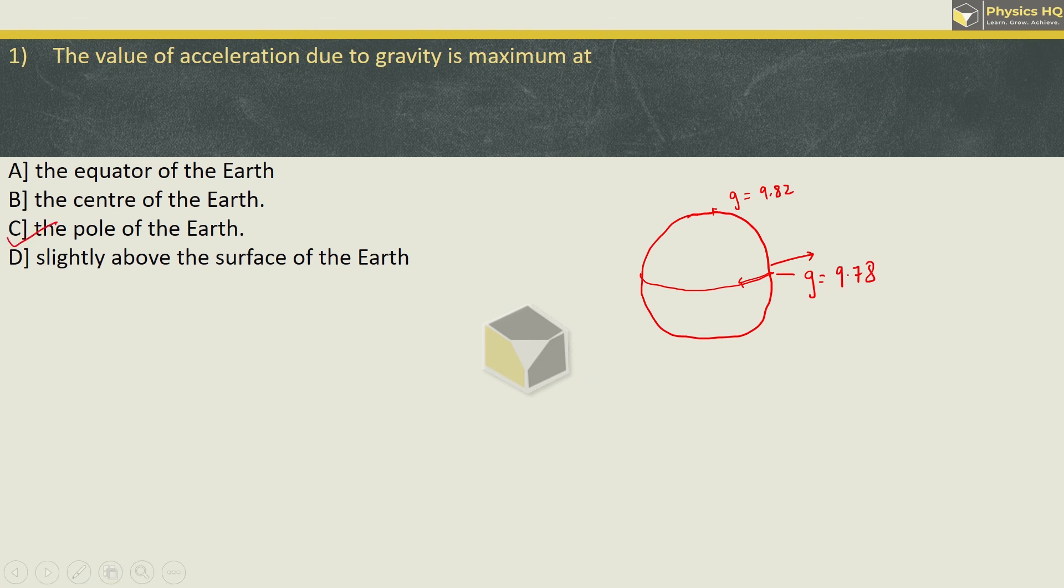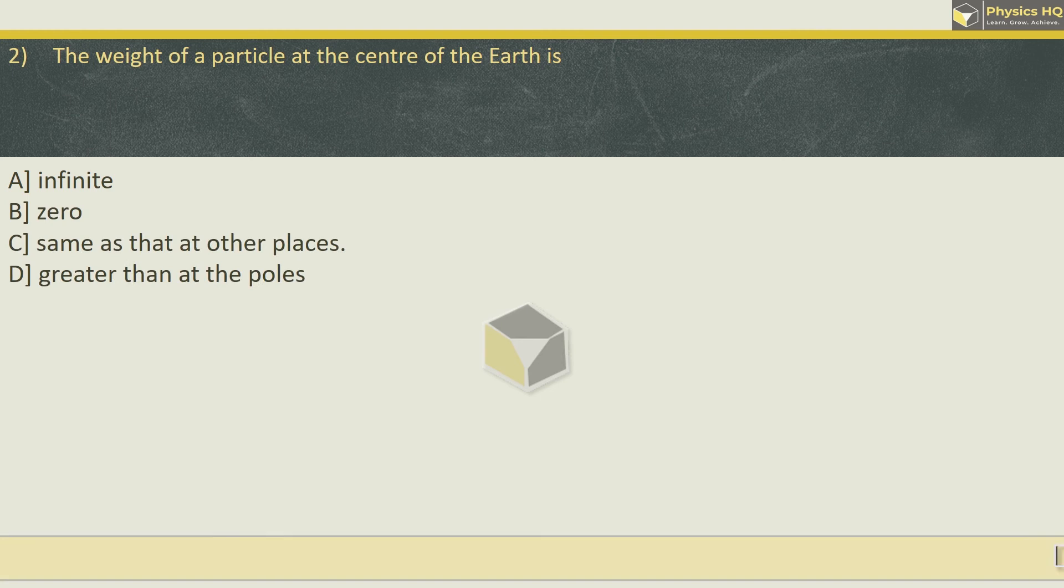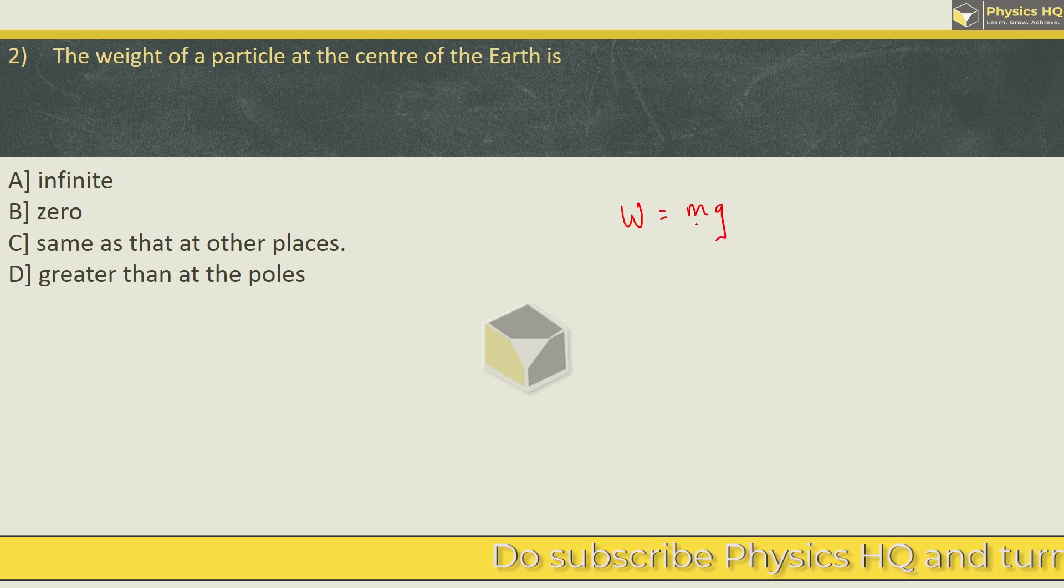Next we will see MCQ. The weight of a particle at the center of the Earth is infinite, zero, same, or greater than at the poles. For this we need to understand how we measure the weight. Weight is given by the formula as mass into g value.